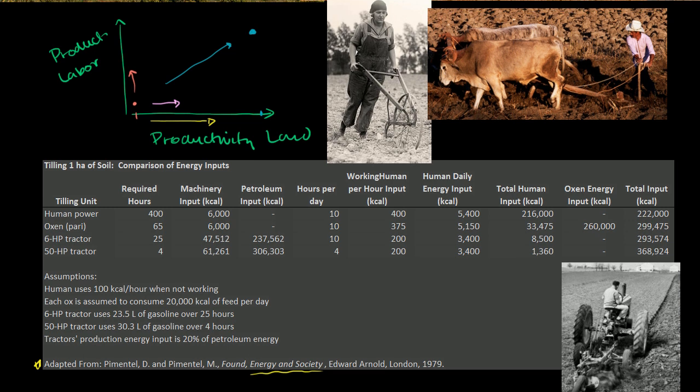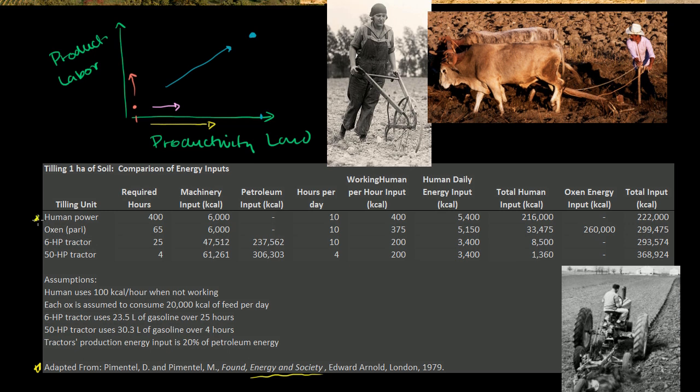When we talk about human power, we're talking about someone literally hand plowing this field. This woman right over here has this little cart that's digging up the soil behind her. When we talk about oxen power, we're talking about the oxen doing most of the work. They're dragging this plow which is digging up all the soil. This gentleman has to kind of be there to supervise. But this is still fairly intense labor that this gentleman is doing.